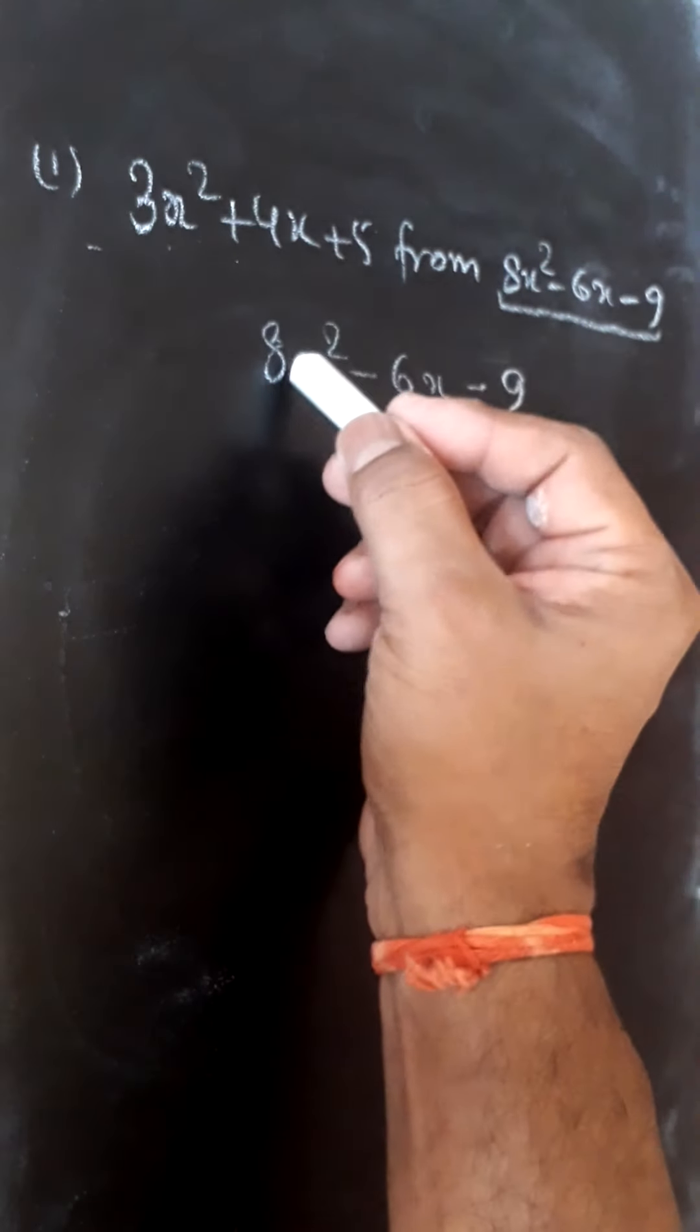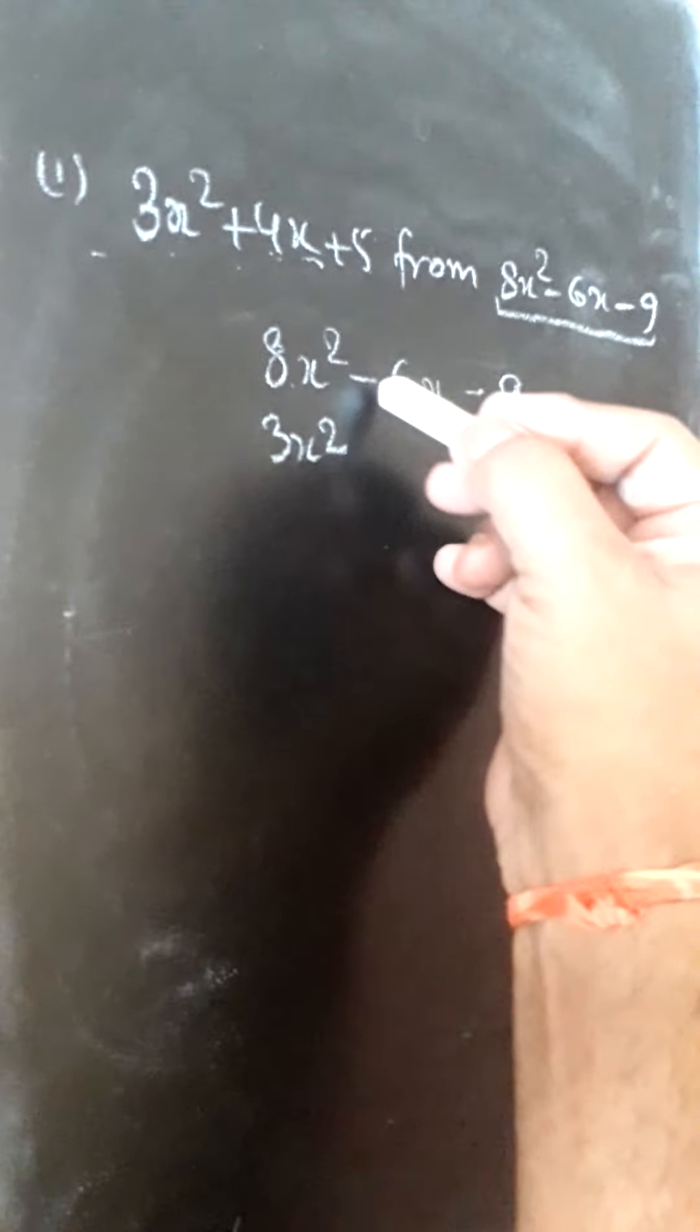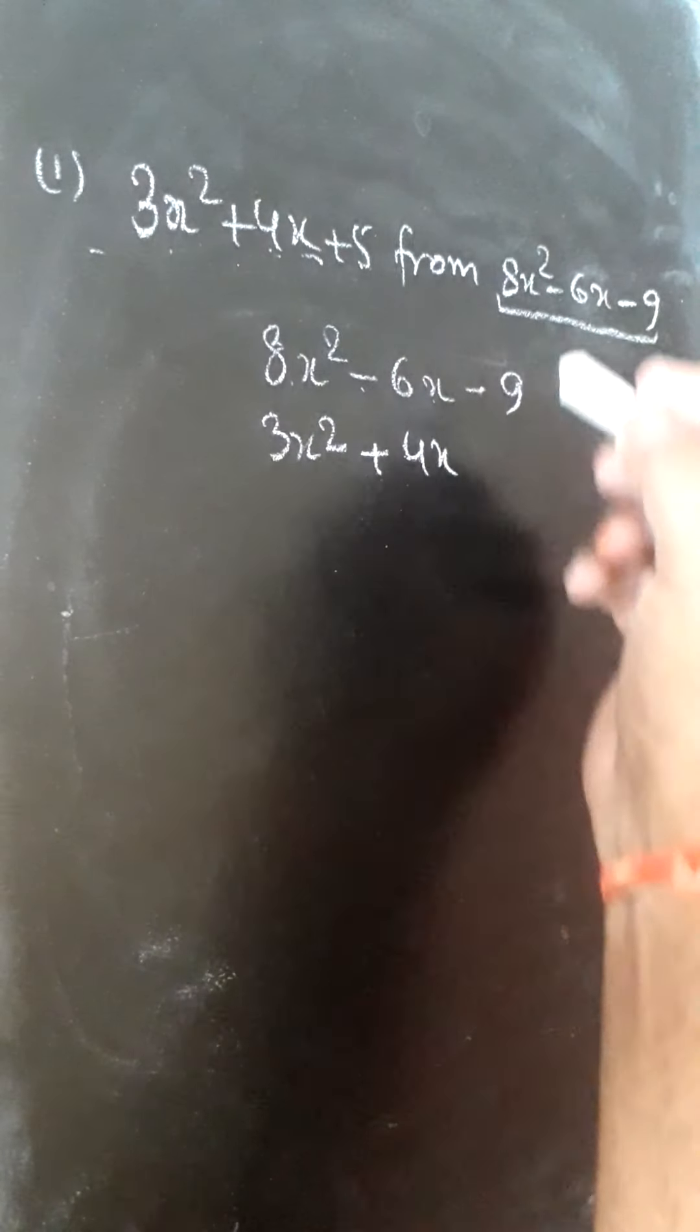We will write 3x² below this 3x², 4x below minus 6x, plus 4x here, and plus 5 here.